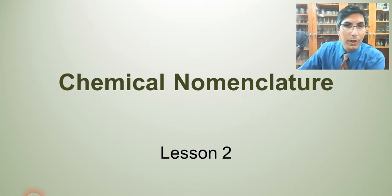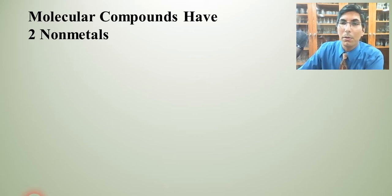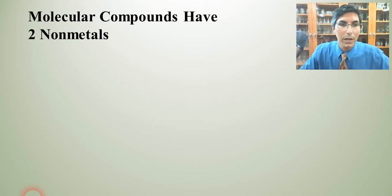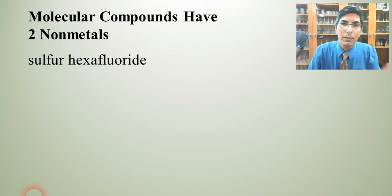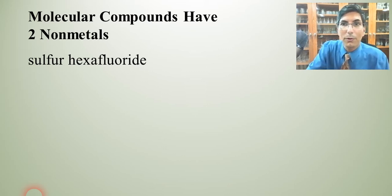The first thing that we want to remember is that molecular compounds, or sometimes called covalent compounds, have two nonmetals. So if we have sulfur hexafluoride, we're going to use those numerical prefixes to write the formula. Hexa means six, and so sulfur hexafluoride is just SF6.